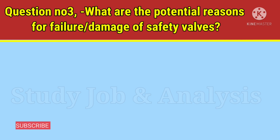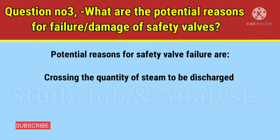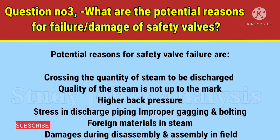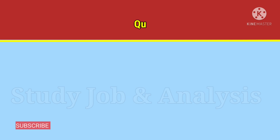Question number three: what are the potential reasons for failure or damage of safety valves? Answer: Potential reasons for safety valve failure are — exceeding the quantity of steam to be discharged, quality of steam not up to the mark, higher back pressure, stress in discharge piping, improper gagging and bolting, foreign materials in steam, and damages during disassembly and assembly in the field.